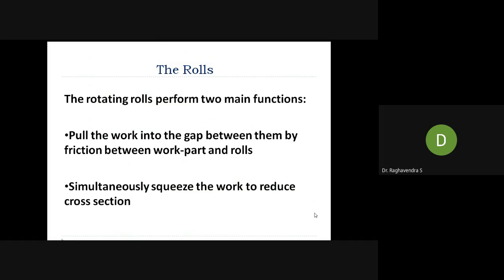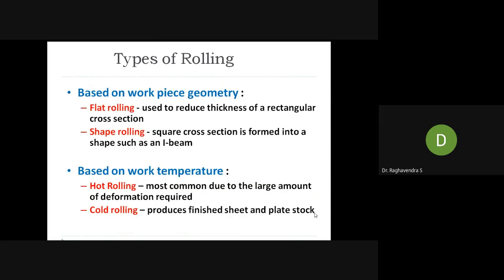The rotating rolls perform two main functions: they pull the work into the gap between them through friction, and simultaneously squeeze and reduce the cross-section or thickness of the material. Whenever two rollers rotate in opposite directions and you feed a small material piece, it gets pulled in automatically due to friction and then gets squeezed.